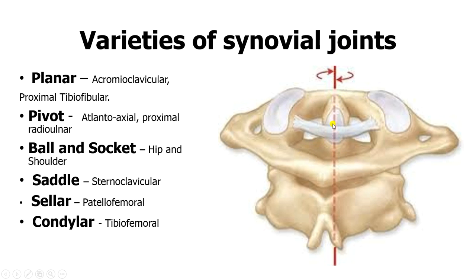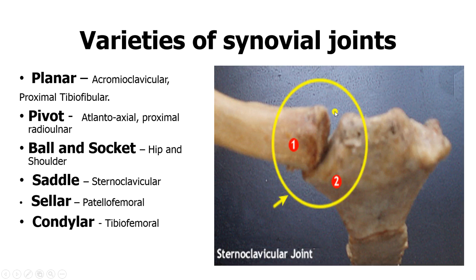In the atlantoaxial joint you can see the axis of rotation. When you twist your head sideways as you say 'no,' you are activating the rotation of the atlantoaxial joint. Then we have the sternoclavicular joint, showing the saddle appearance.